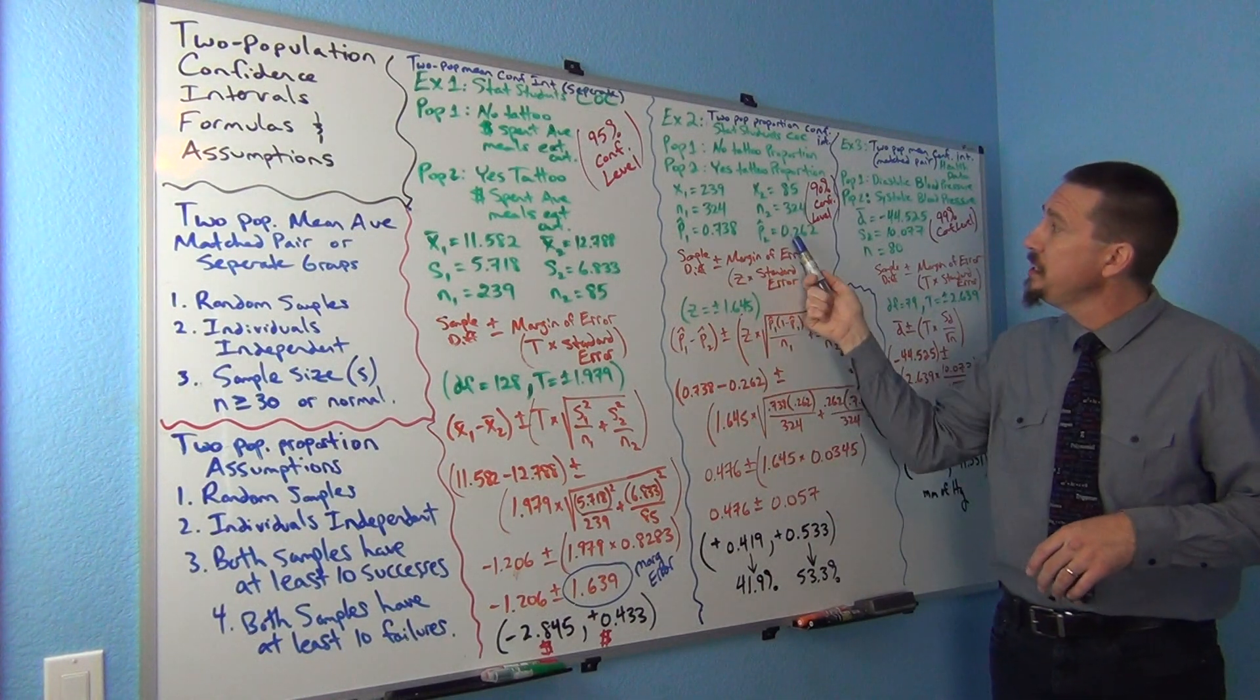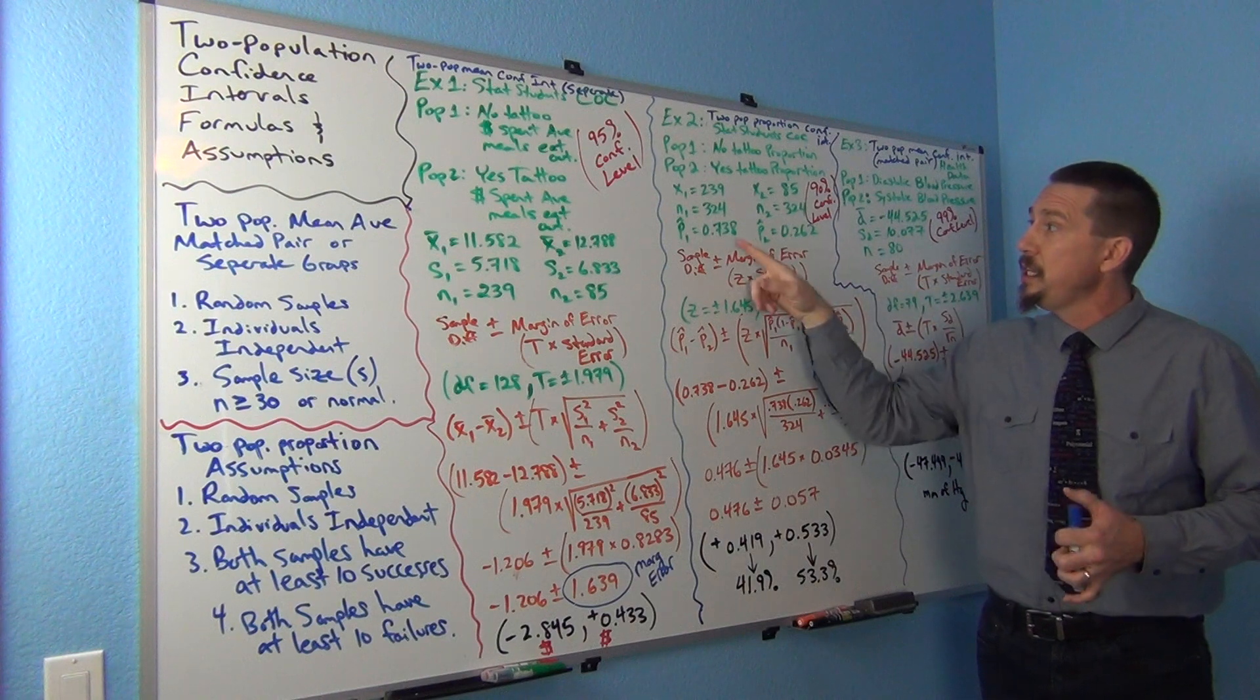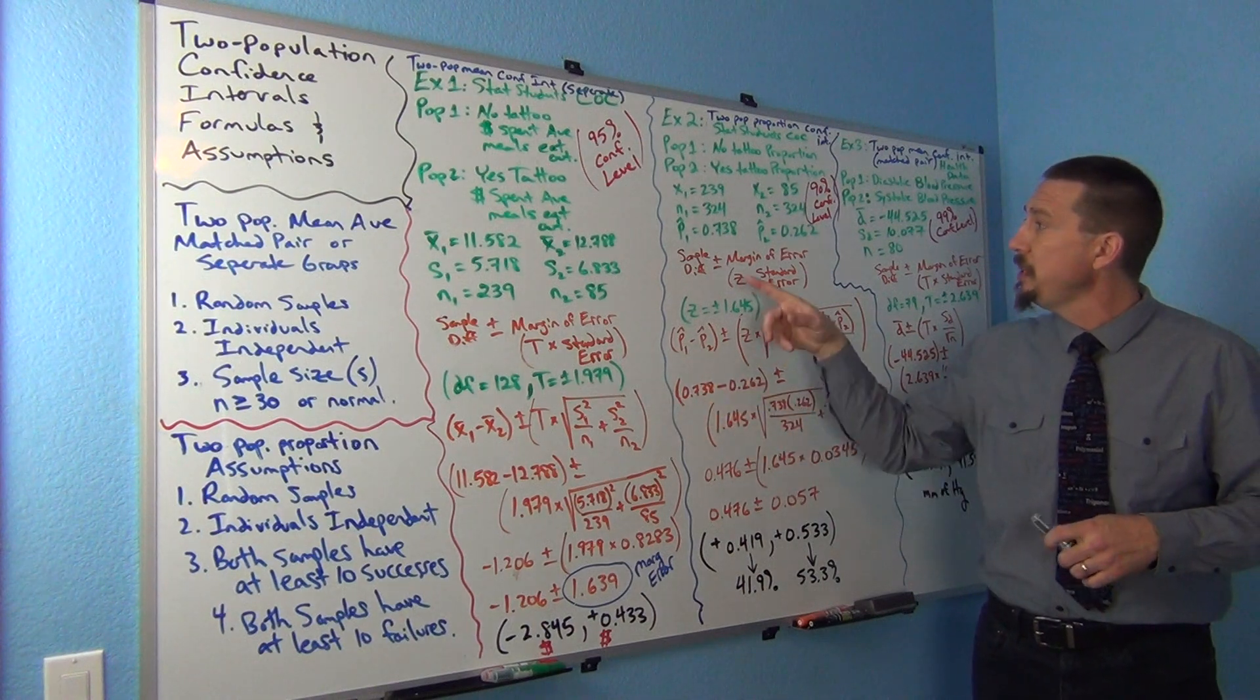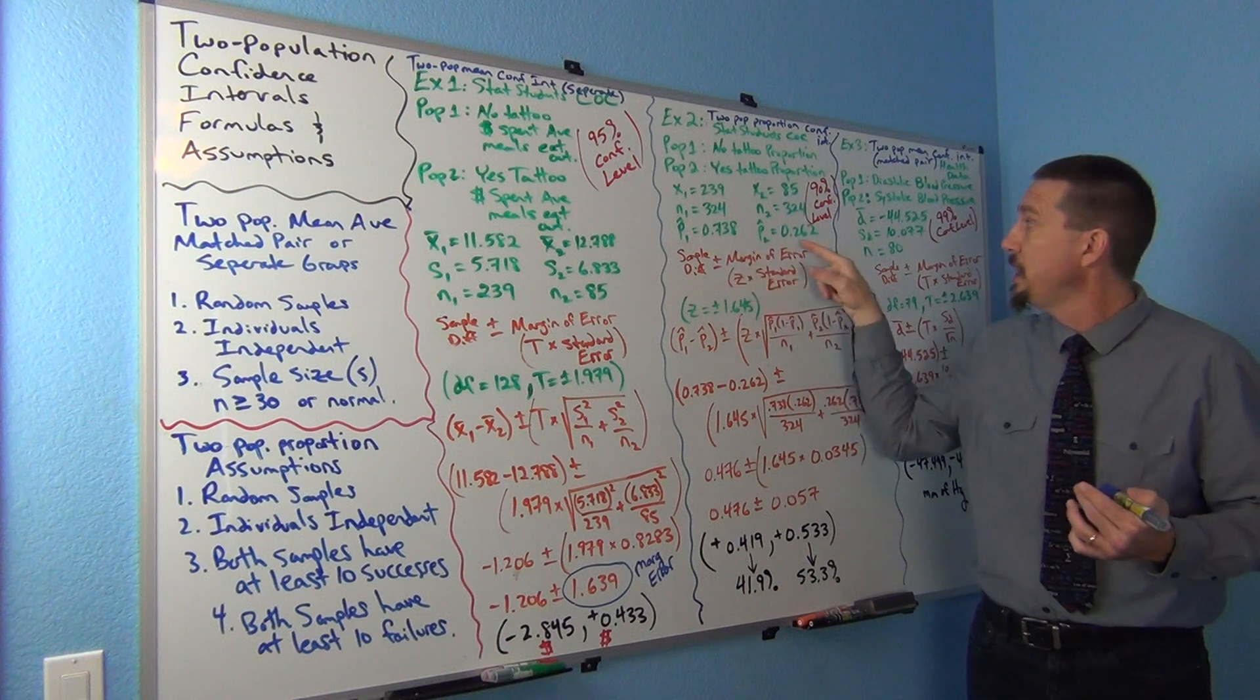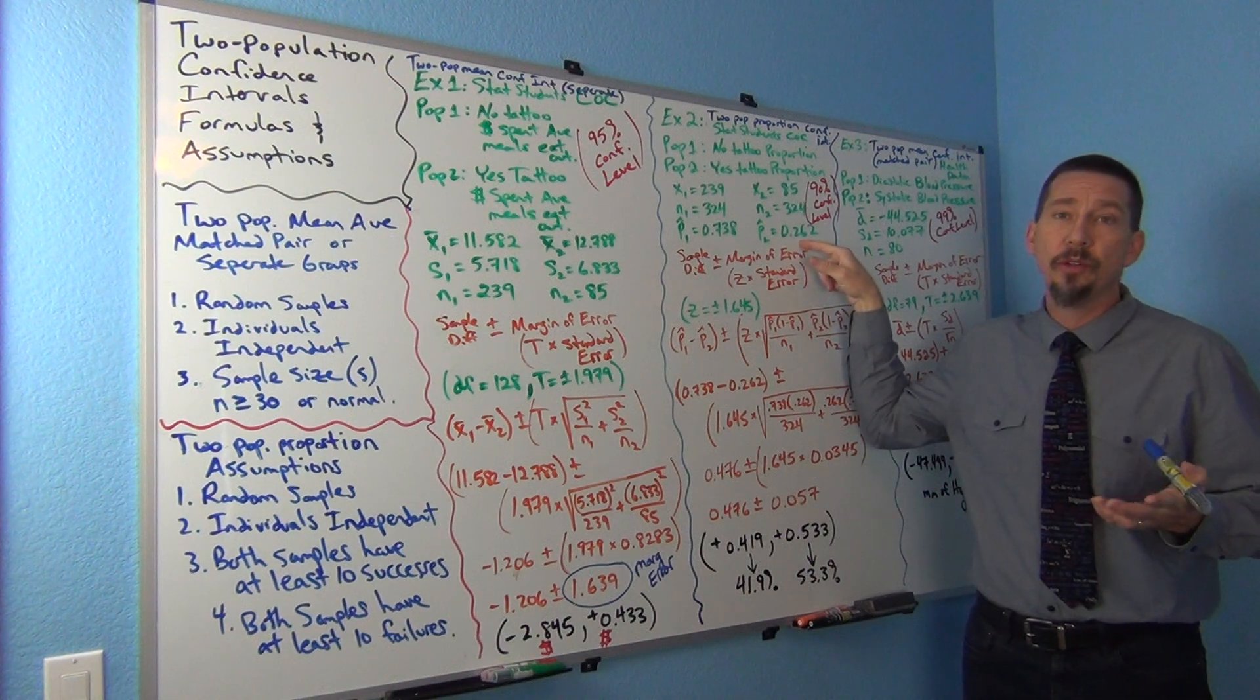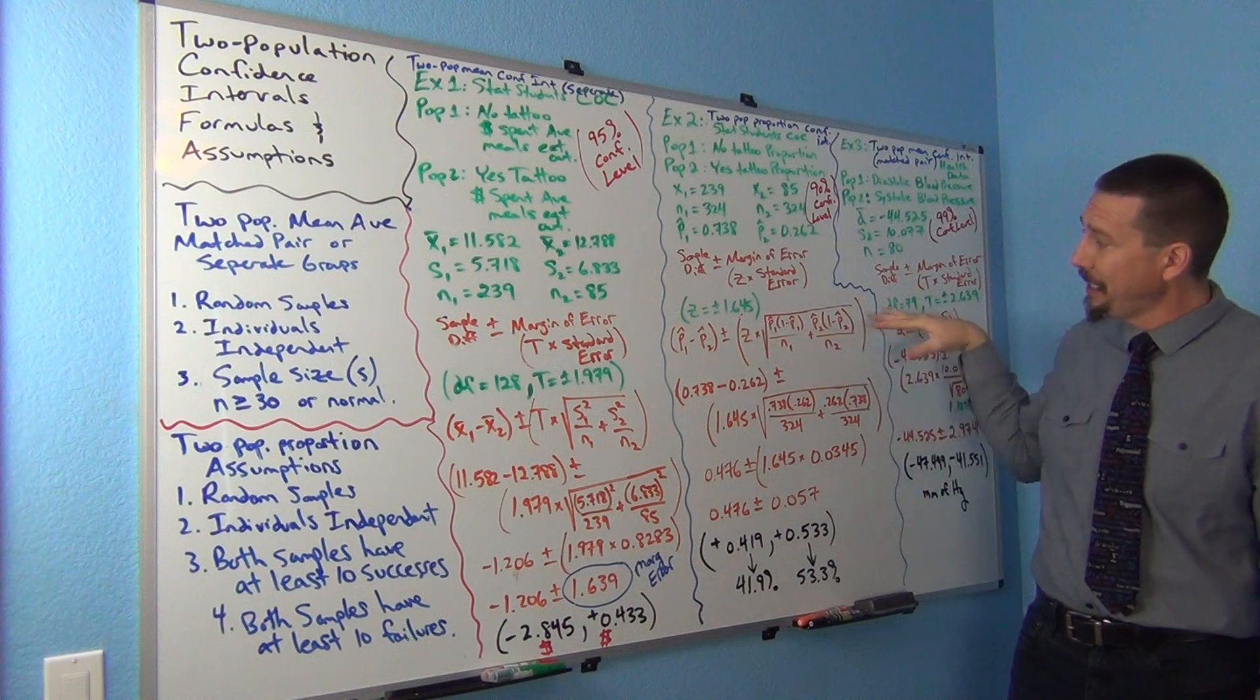So we're going to do the difference between the sample proportions. Remember, these are the decimal equivalent of a percentage. So p1 hat, 0.738 was p1 hat. That was the sample percentage of students that did not have a tattoo, 73.8%. Sample percentage of stat students that did have a tattoo was 0.262 or 26.2%. And basically all I'm doing is plugging this all in.